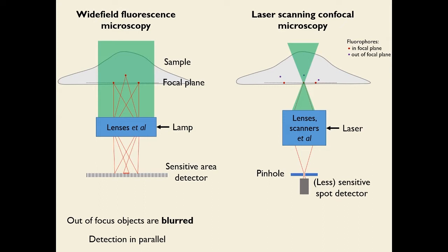The spot detector behind the pinhole has no spatial information — it only senses the amount of light — and is typically less sensitive than camera area detectors, with lower quantum efficiency. Light from in-focus fluorophores passes through the pinhole and reaches the detector. However, light from out-of-focus fluorophores is misaligned and most of it hits the edges of the pinhole, so it cannot reach the spot detector. This is how out-of-focus light is rejected.